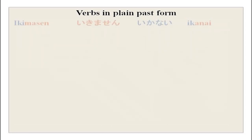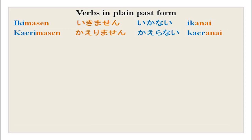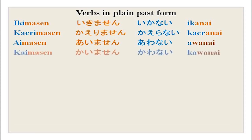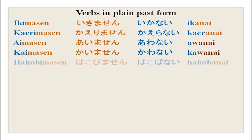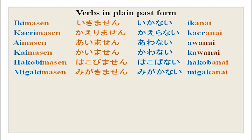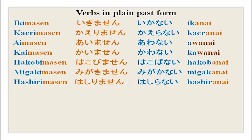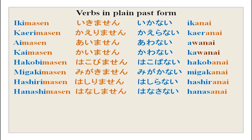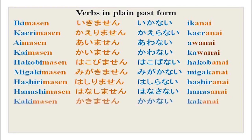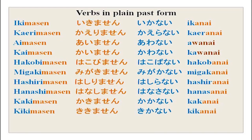The first one is ikimasen → ikanai. Kaerimasen → kaeranai. Aimasen → awanai — please note, wa is there. Kaimasen → kawanai. Hakobimasen → hakobanai. Migakimasen → migakanai. Hashirimasen → hashiranai. Hanashimasen → hanasanai. Kakimasen → kakanai. Kikimasen → kikanai. And arimasen is just nai.